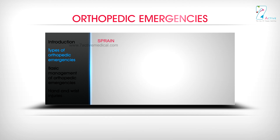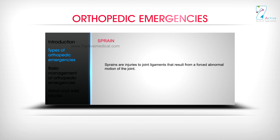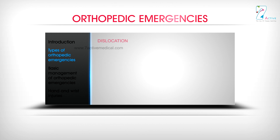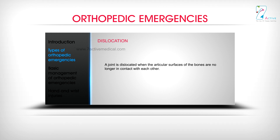Sprain: Sprains are injuries to joint ligaments that result from a forced abnormal motion of the joint. Dislocation: A joint is dislocated when the articular surfaces of the bone are no longer in contact with each other.